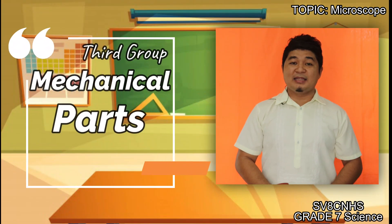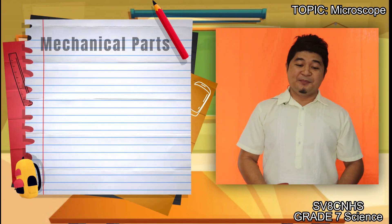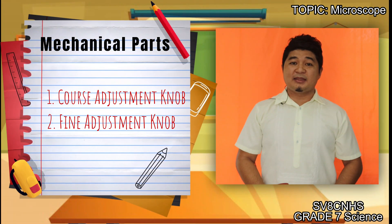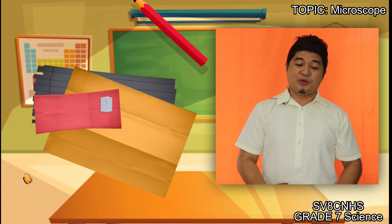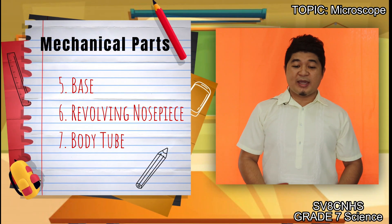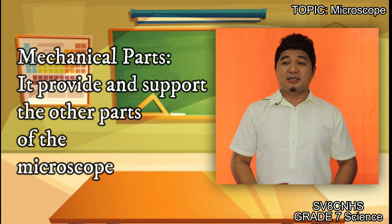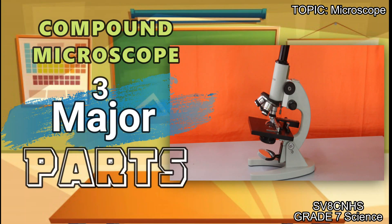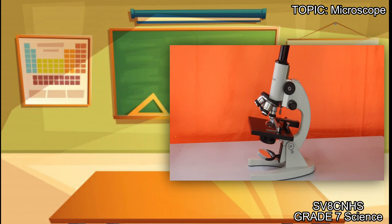Number three is what we call the mechanical parts, which involves: number one, the coarse adjustment knob; number two, the fine adjustment knob; number three, the stage and stage clip. We also have the arm, the base, the revolving nosepiece, and the body tube. When we say mechanical parts, it provides and supports the other parts of our microscope. Our compound microscope has three major parts: the magnifying parts, the illuminating parts, and the mechanical parts.